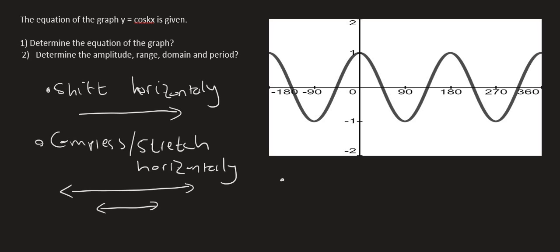Then we can do the same things in the vertical direction, so we can shift something vertically, so that does something like that, or it could go down, and then you could also compress or stretch vertically, and so that has two arrows to show that it goes in both directions.